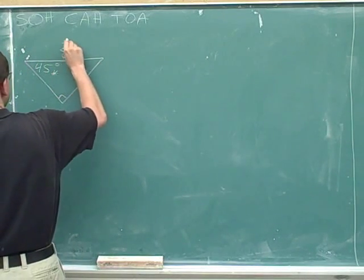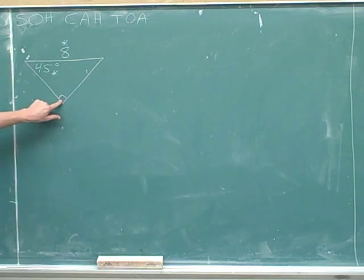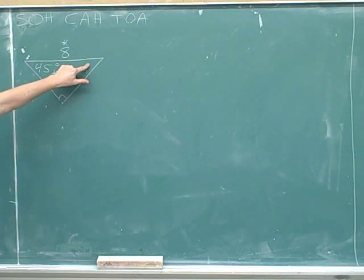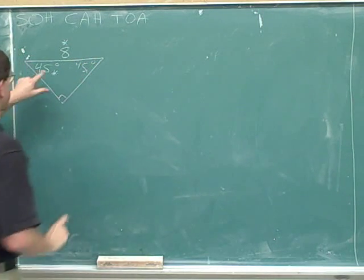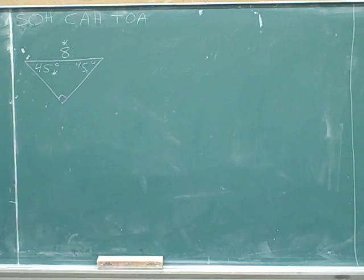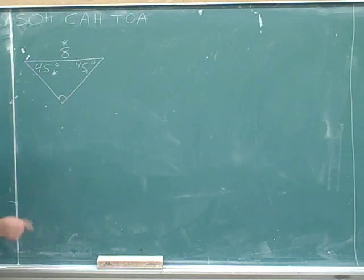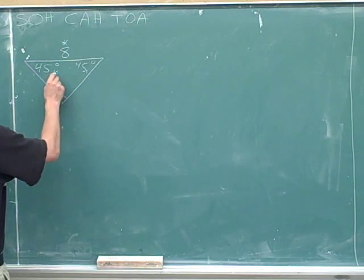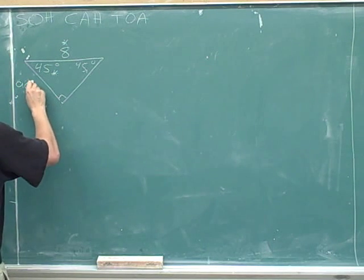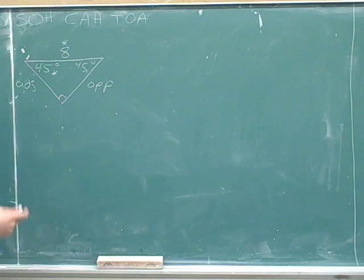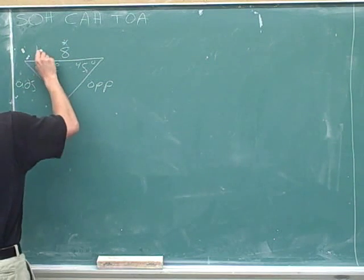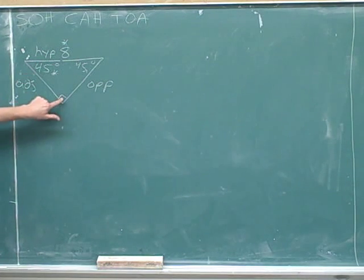I'll use asterisks to mark the information we were originally given. This angle we know is 90. We know the other two angles have to add up to 90, so this angle must be 90 minus 45, which is also 45 — because 45 plus 45 is 90, so these two angles are equal. Since both angles are equal, it doesn't matter which we focus on, but I'll leave the asterisk here. So this side is adjacent, and this side is opposite. The 8 is the length of the hypotenuse, because it's opposite to the right angle.